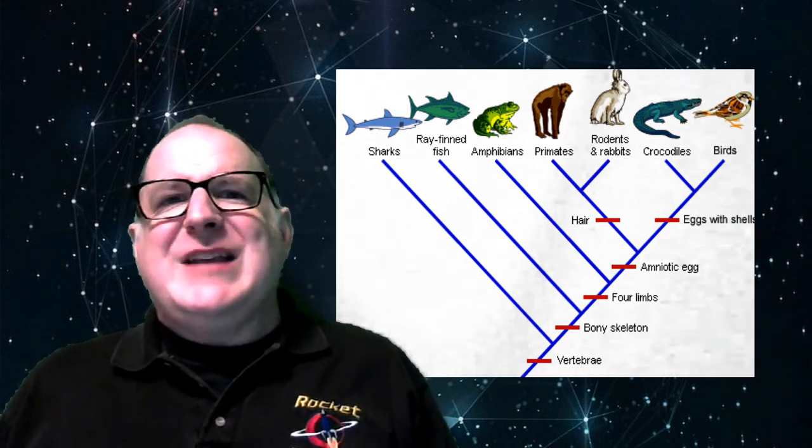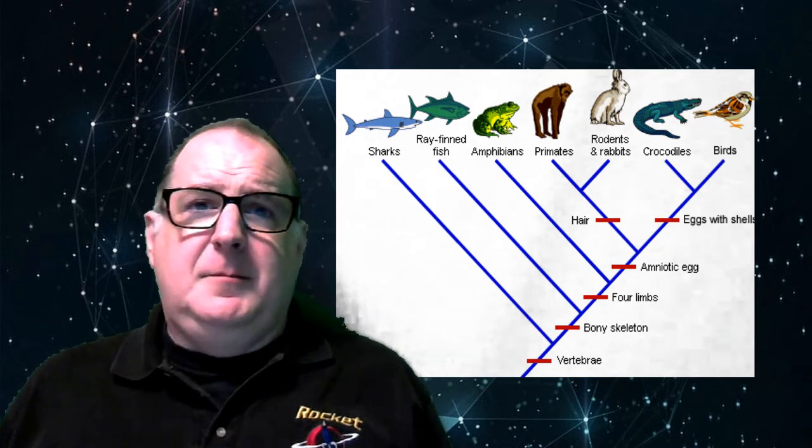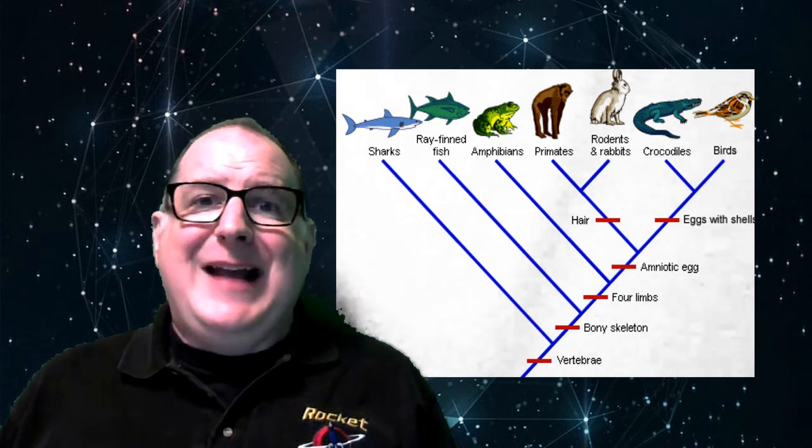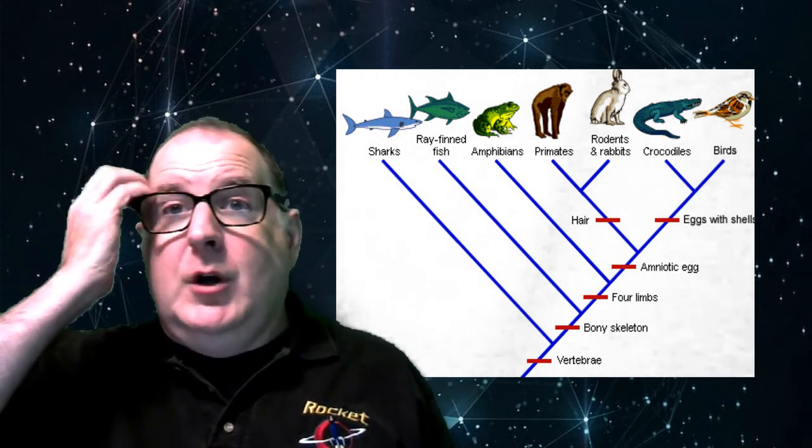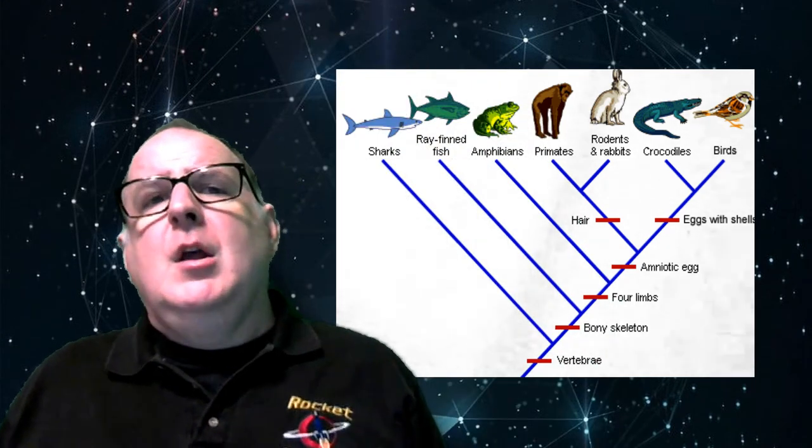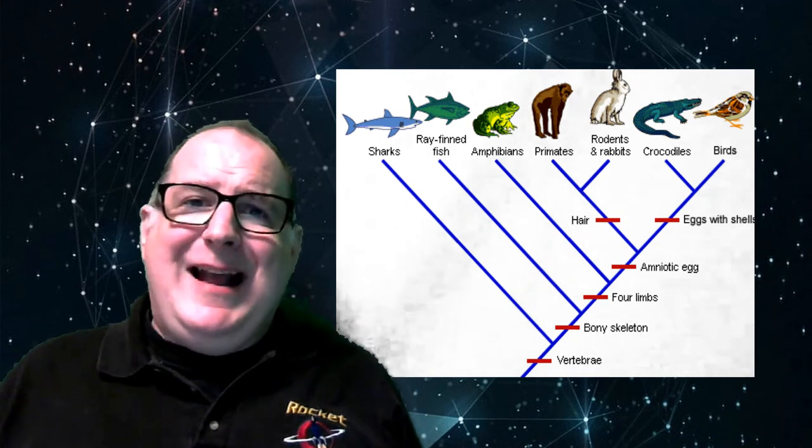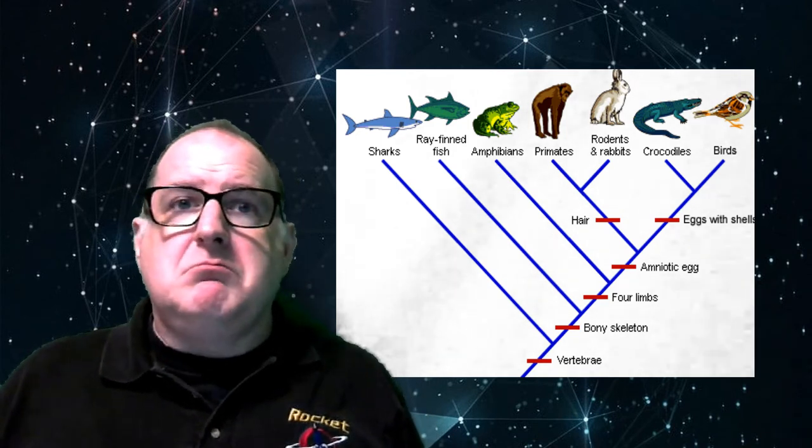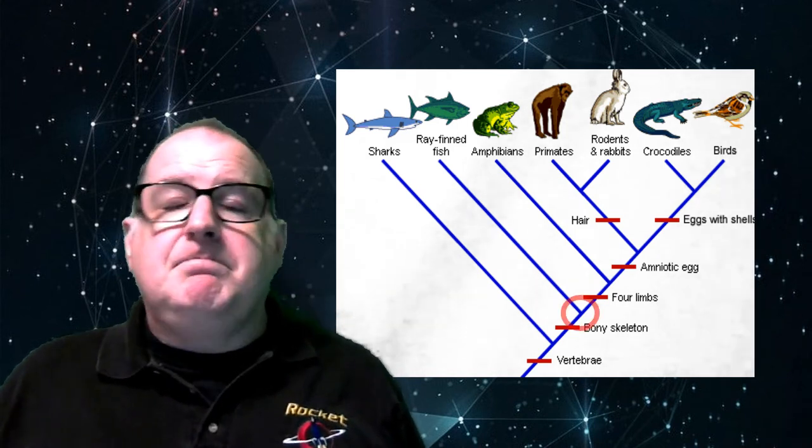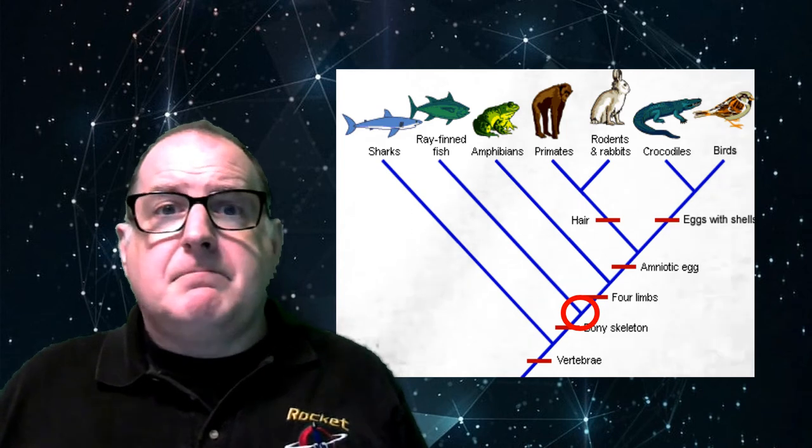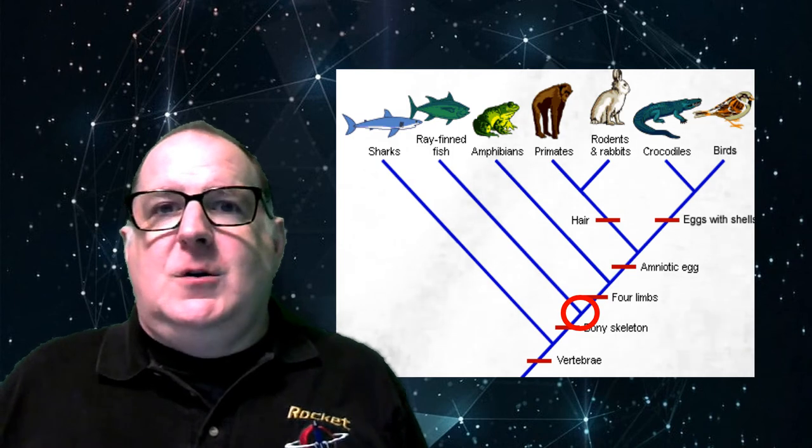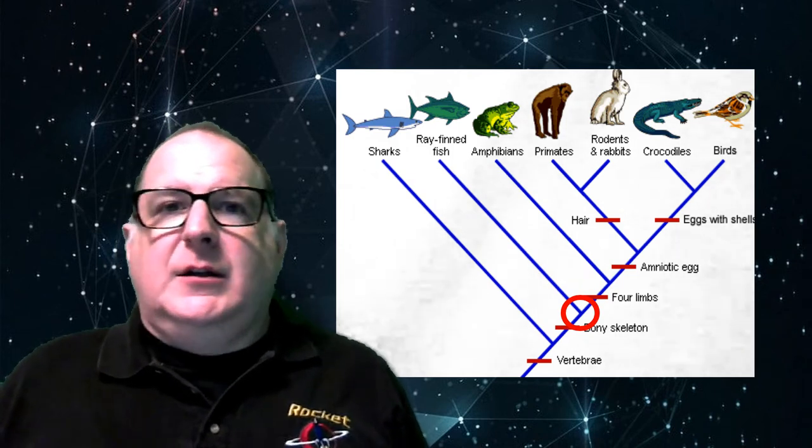Where the branching actually happens is where the most recent common ancestors are. So, going down from the top, the most recent common ancestor between, say, ray-finned fish and rabbits is here. This was after the bony skeleton was developed.